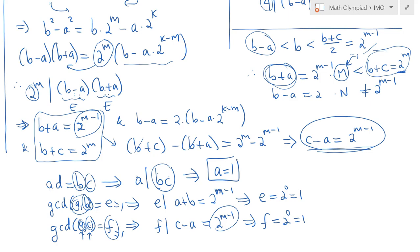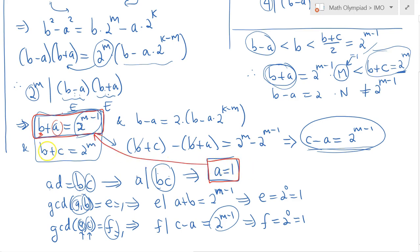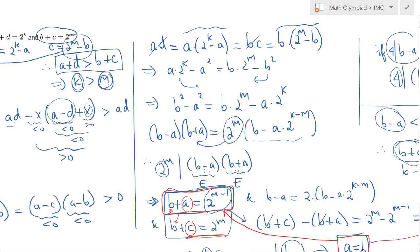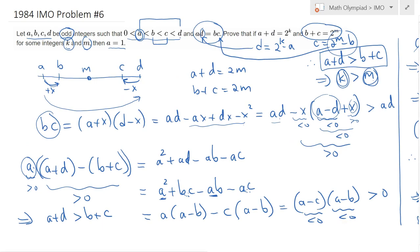Once we know A equals 1, we can use the expression for B plus A equals 2^(M-1) to find B, then substitute into the expressions to find C and D as well. This completely solves the 1984 IMO Problem 6. Hope to see you in the next lecture.